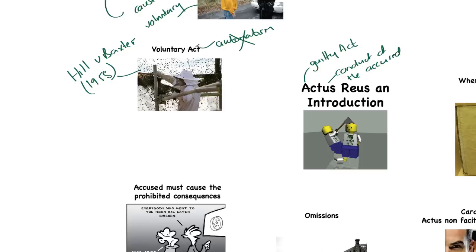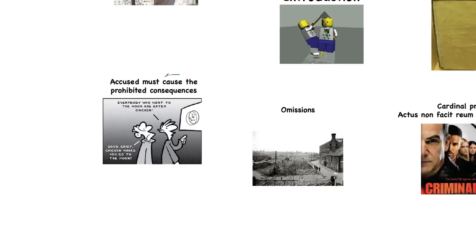We'll now move on to this concept: the accused must cause the prohibited consequences. So the crime must be caused by some conduct. We're going to look at this in much greater depth when we look at causation. The conduct doesn't need to be the direct cause, but it can be through the agency of others.